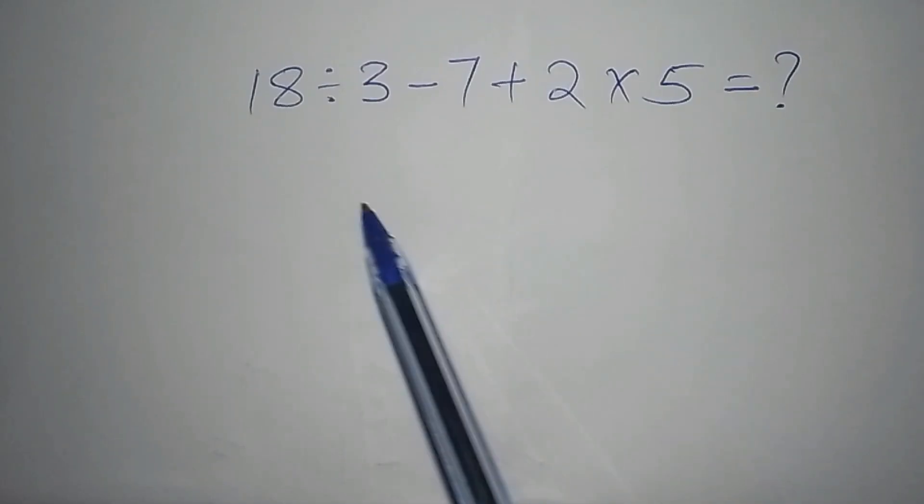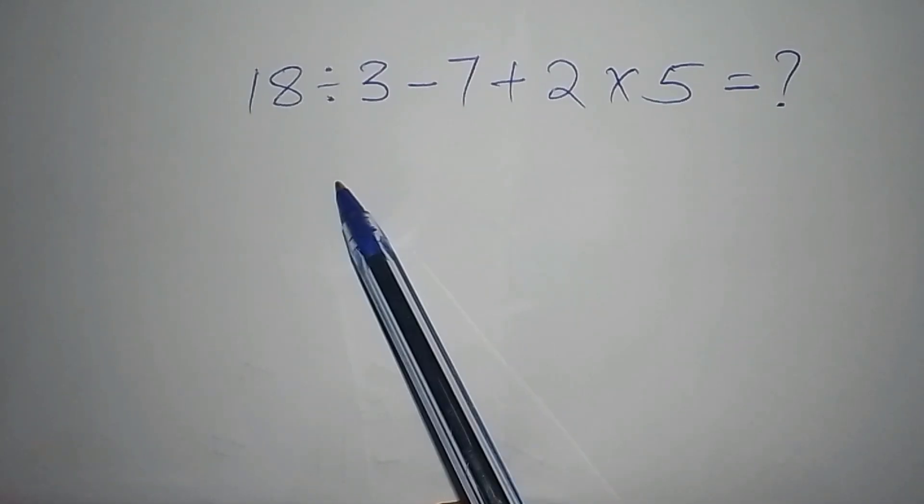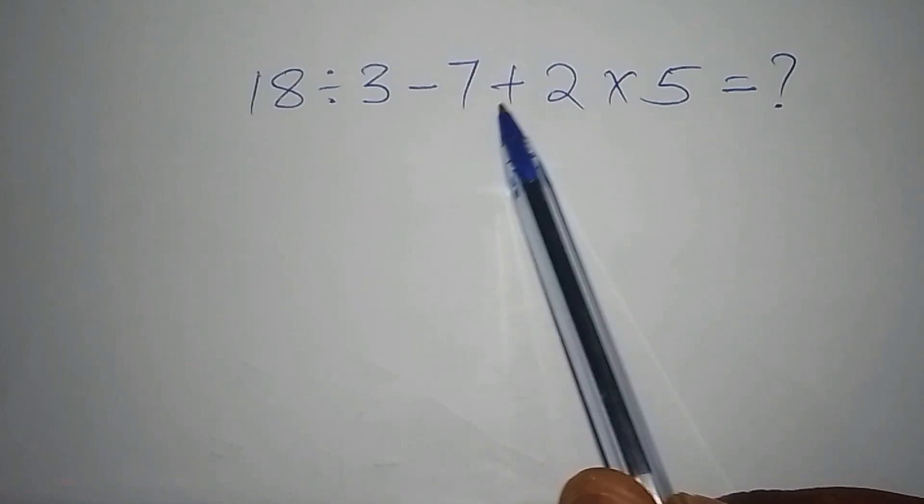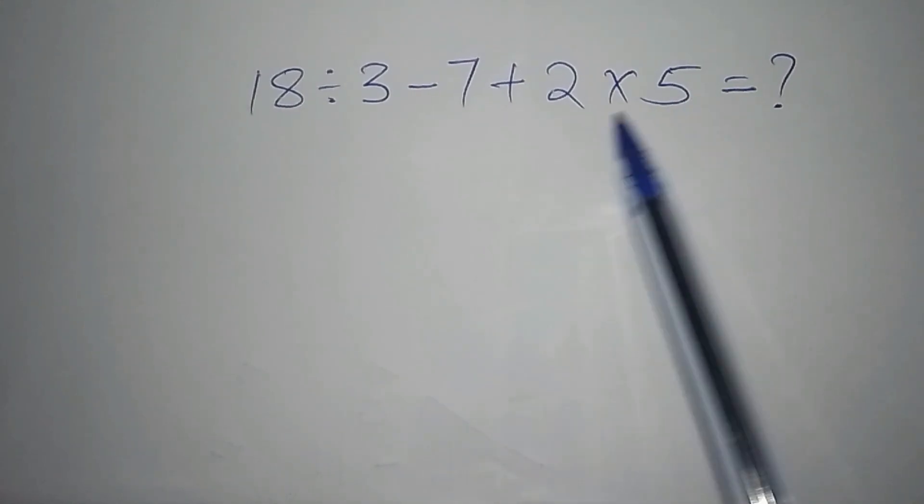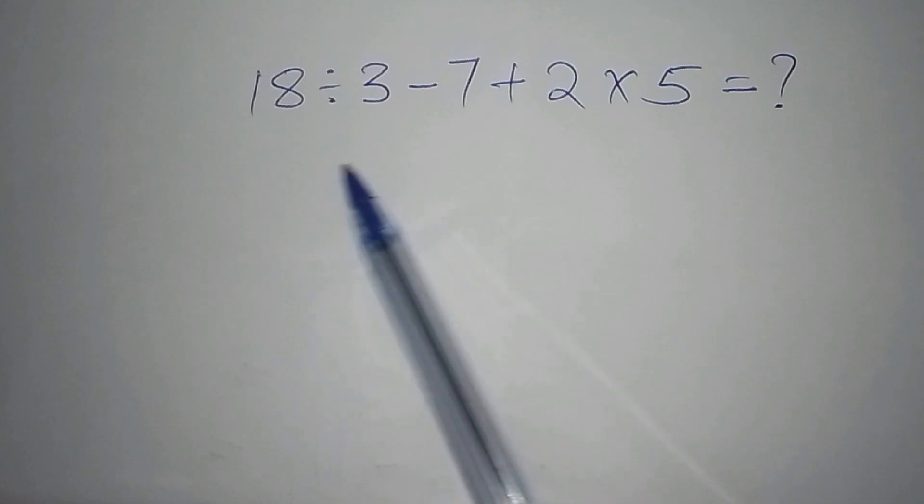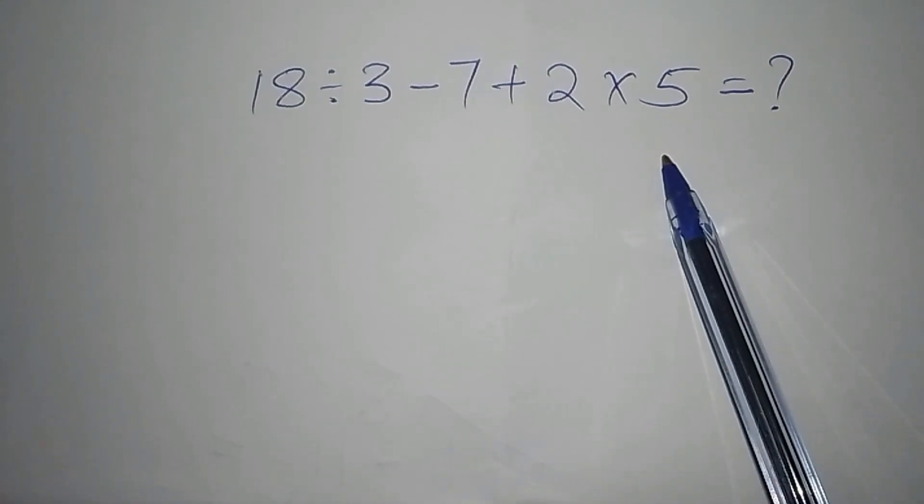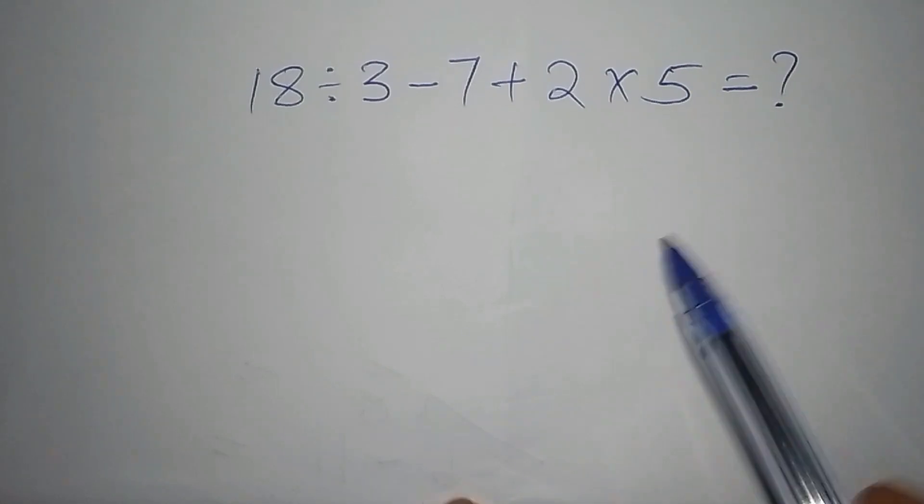Hi, when you arrived here you've arrived at the home of champions, that's the home of mathematics. Now we have 18 divided by 3 minus 7 plus 2 multiply by 5. I want to show you the correct way on which you can work out this math problem without any confusion. With me is Teacher John, let's kick start.